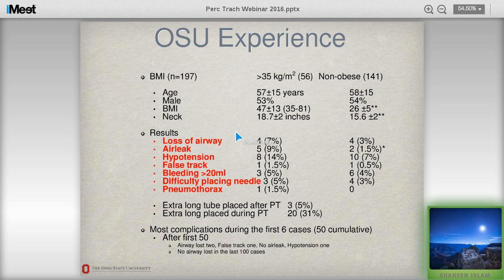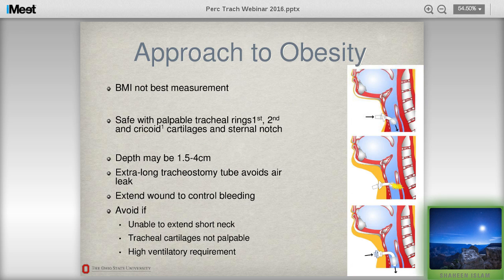This is our experience from our initial 200 cases, started about 11 years ago. In the obese population, loss of airway was actually common, but not different from non-obese patients. Air leak was seen more and was statistically significant. False track formation was about the same, and bleeding was not different. Difficulty placing the needle was about the same, and there was one pneumothorax. Most complications occurred within the first six cases out of each 50 accumulated, telling us that team education is needed.